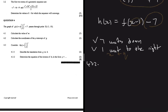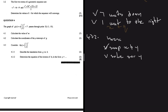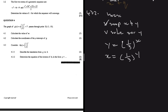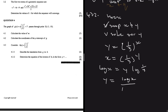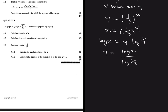Now 4.3.2: determine the equation of the inverse of h in the form y equals. For the inverse, I swap x and y. Starting with y = (1/3)^x, swapping gives x = (1/3)^y. Taking logs on both sides: log(x) = y·log(1/3), so y = log(x) / log(1/3), which gives us y = log base (1/3) of x.